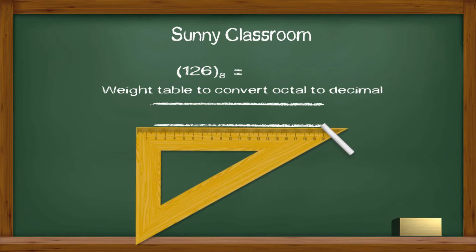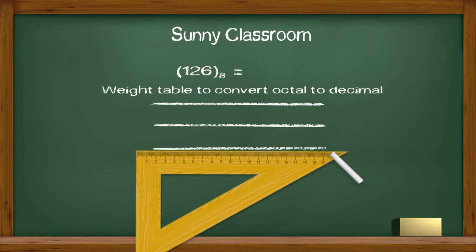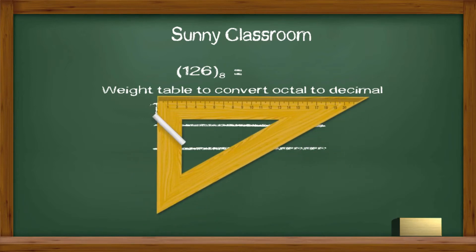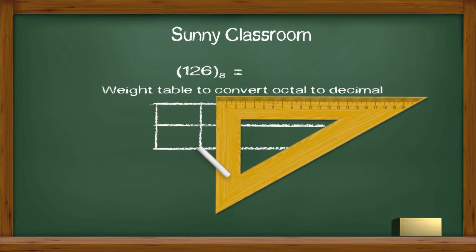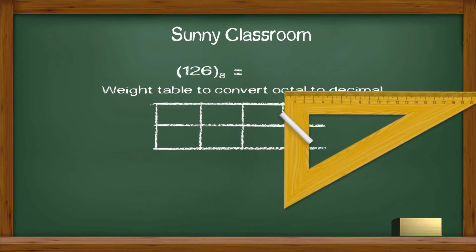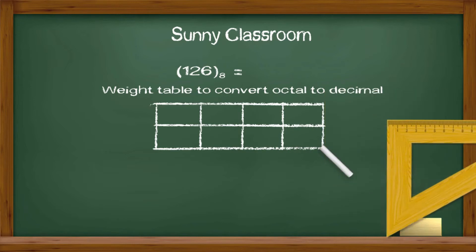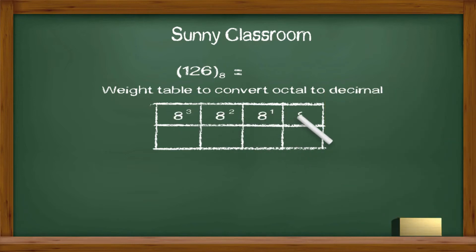We draw a 4 column table, actually 3 is enough, because we only have 3 octal digits. If you convert 5 digit long octal, you need 5 columns, and if you convert 6 digit, you need 6 columns, and so on.